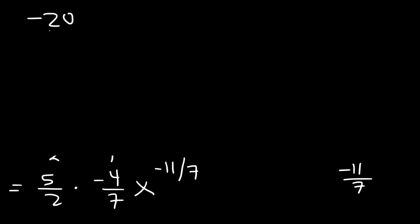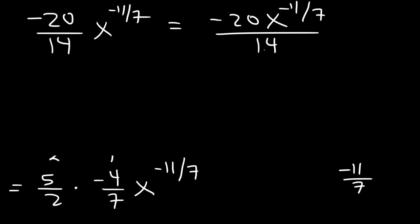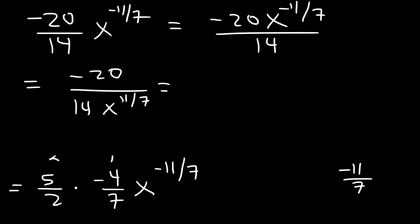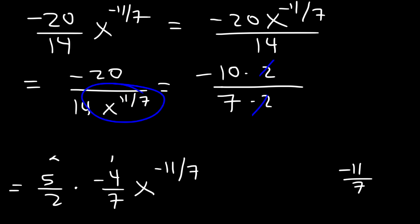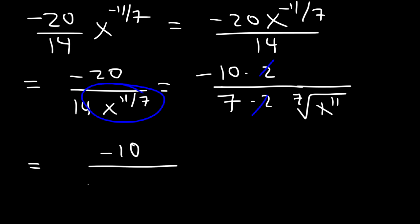5 times negative 4 is negative 20, and 2 times 7 is 14. So we have negative 20x to the negative 11/7 divided by 14. That's equivalent to negative 20 over 14 times x to the positive 11/7 in the denominator. Since 20 is 10 times 2 and 14 is 7 times 2, we cancel the 2. Converting back to radical form gives the 7th root of x to the 11th power. The final answer is negative 10 divided by 7 times the 7th root of x to the 11th power.